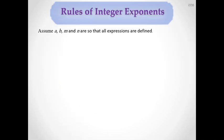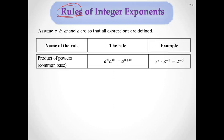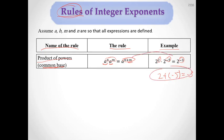Now, rules of integer exponents. The first rule is the product of powers with a common base: A to the M times A to the N equals A to the M plus N. For example, 2 to the 2nd times 2 to the negative 5th: adding the powers gives 2 plus negative 5 equals negative 3, so the result is 2 to the negative 3rd.